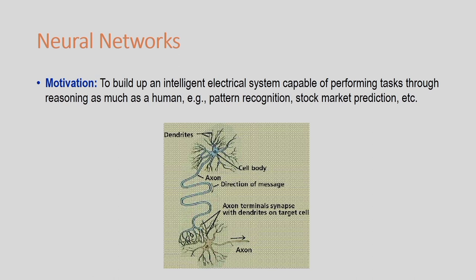Let us begin with the concept of artificial neural networks. The objective is to build an electrical system capable of performing tasks through reasoning as much as a human. That is the motivation of the artificial neural network, which can be employed for pattern classification, pattern recognition, and also for predictions. There are many applications of artificial neural networks.